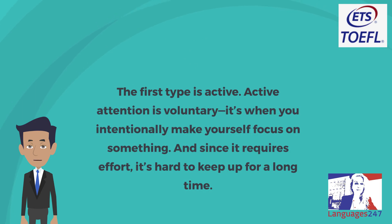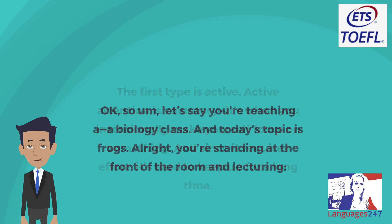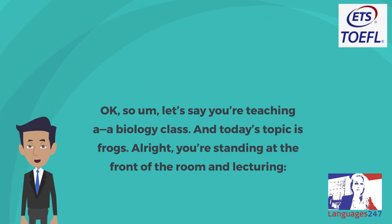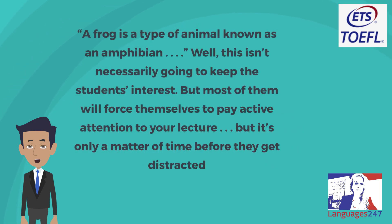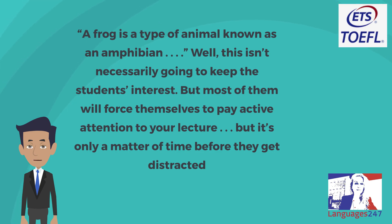'The first type is active attention. Active attention is voluntary — it's when you intentionally make yourself focus on something. Since it requires effort, it's hard to keep up for a long time. Let's say you're teaching a biology class and today's topic is frogs. You're standing at the front of the room lecturing: "A frog is a type of animal known as an amphibian." This isn't necessarily going to keep students' interest, but most of them will force themselves to pay active attention. But it's only a matter of time before they get distracted.'